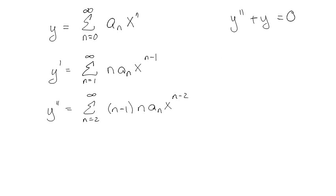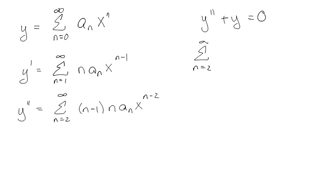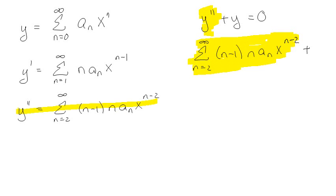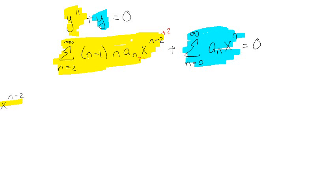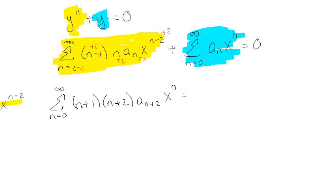So I'm going to plug these into the equation, which equals 0. I've got the sum from n equals 2 to infinity of n minus 1 times n times a sub n times x to the n minus 2, plus the sum from n equals 0 to infinity of a sub n times x to the n, and I know that's equal to 0. Because I'm super awesome, I'm going to re-index by adding 2 to the first sum's index, giving n plus 1 times n plus 2 times a sub n plus 2, times x to the n.